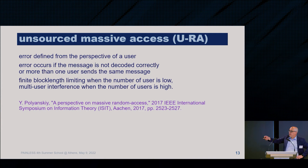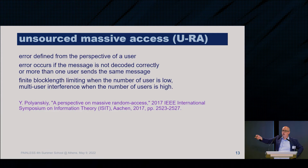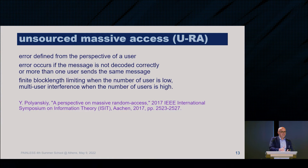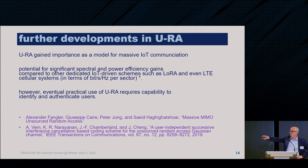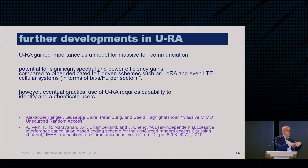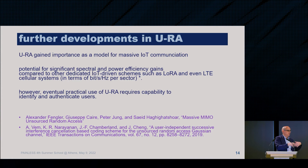The error is defined from the perspective of a user: an error occurs if the message is not decoded correctly or if more than one user sends the same message. There are finite block-length effects in this transmission. These are symbol-level models, unlike Aloha which is a packet-level model. A lot of groups are working on unsourced random access — putting it into massive MIMO, using different spreading sequences, and so on, building on Poliansky's theoretical result.